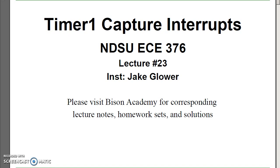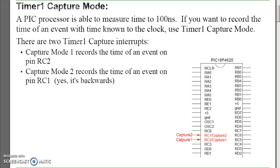With Timer 1 Capture, I know the precise time the button was pushed. There are two different modes: Capture Mode 1 and Capture Mode 2. What they do is record the time of the event within one clock, or 100 nanoseconds.